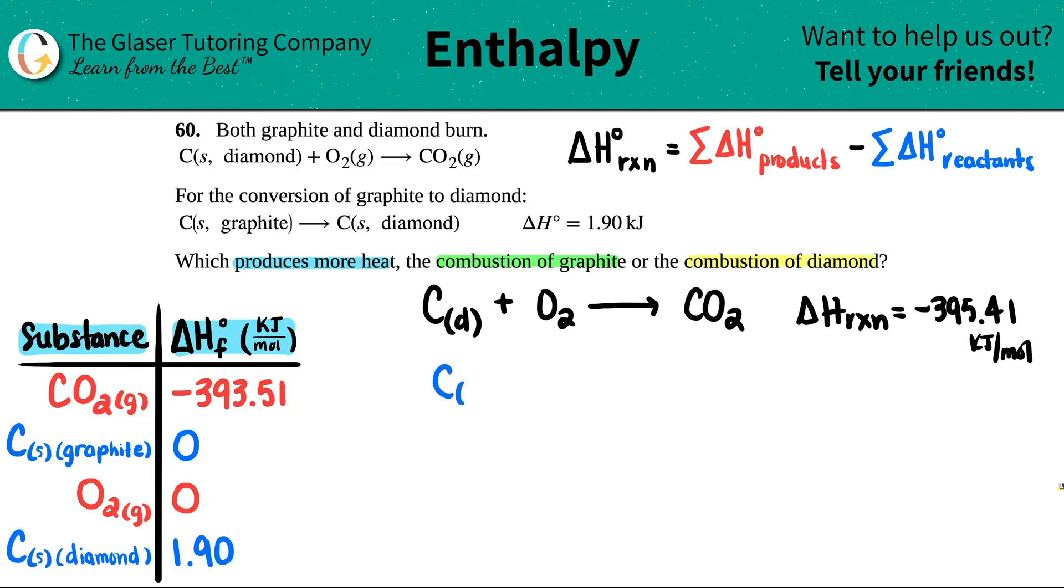They gave me this piece of information. Look what happens if I write this formula out. Now I have C graphite which will convert into C diamond, and they gave me a delta H for that. They told me that this process takes 1.90 kilojoules, technically per mole. Look, I have things that are similar on opposite sides. I have a diamond on the reactant side and a diamond carbon on the product side. Anything that's on the opposite sides always gets cancelled, and this is Hess's law.